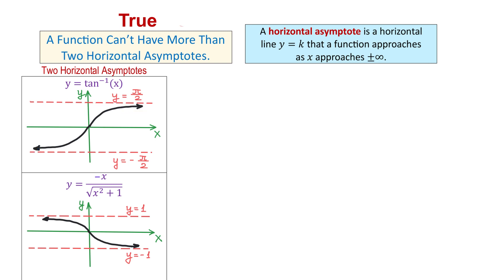Both these horizontal lines represent horizontal asymptotes. Another function with two horizontal asymptotes is y equals negative x over the square root of x squared plus 1. In this function, as x approaches positive infinity, the graph approaches y equals negative 1. And when x approaches negative infinity, the graph approaches y equals 1. Both these horizontal lines represent horizontal asymptotes.